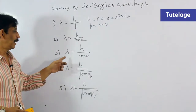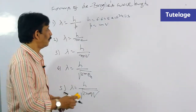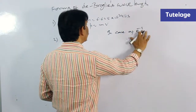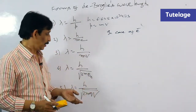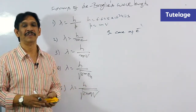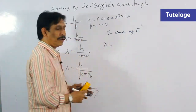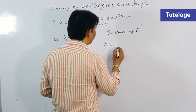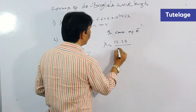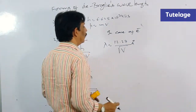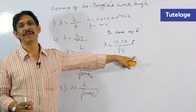Students must keep in mind that in lambda = h/mv, v stands for velocity, whereas in lambda = h/√(2mqV), v stands for potential difference. In case of an electron, the mass is 9.1 × 10⁻³¹ kg and the charge is 1.6 × 10⁻¹⁹ coulombs. By substituting all constant values, we can directly say that for an electron, lambda is equal to 12.27 divided by the square root of V angstroms, where V is the potential difference.